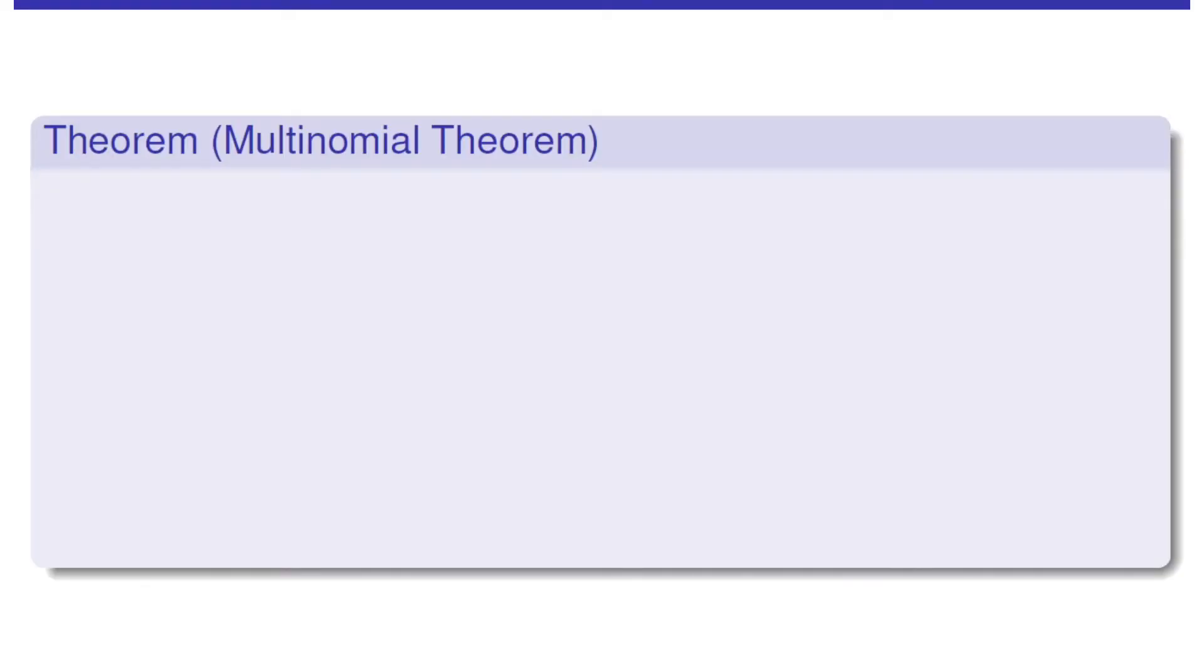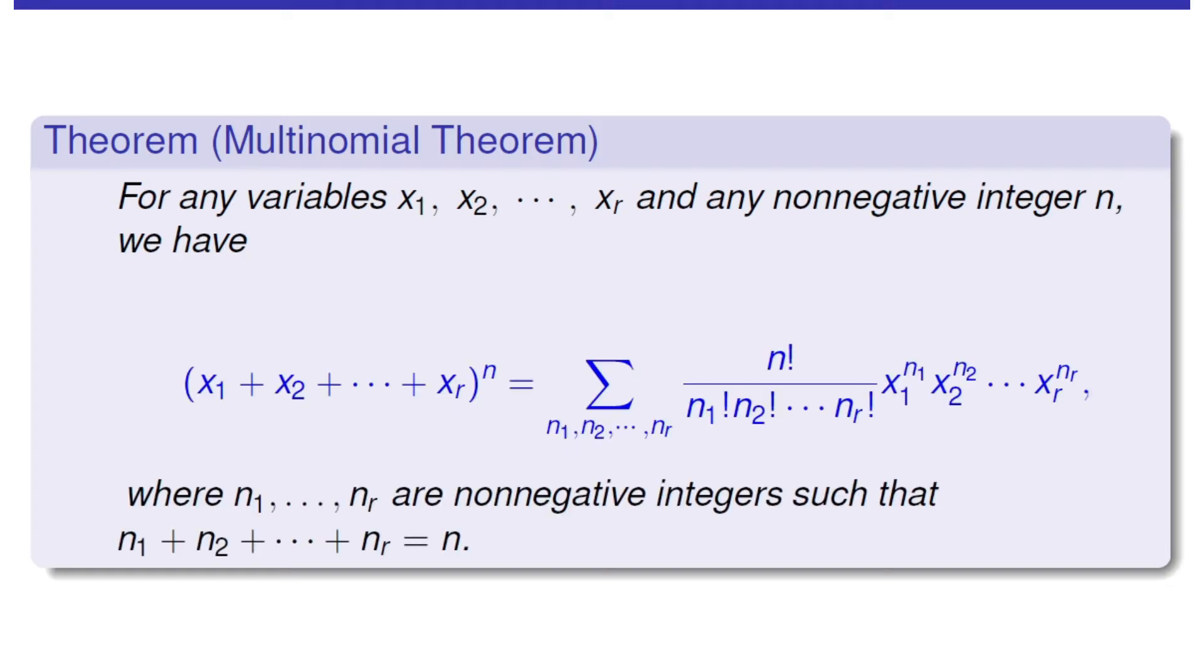So we have this multinomial theorem. For any x1 through xr, any non-negative integer n, we have this equation.